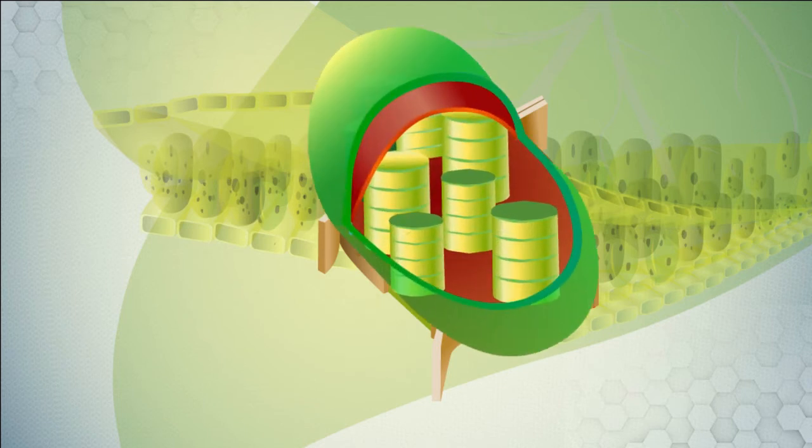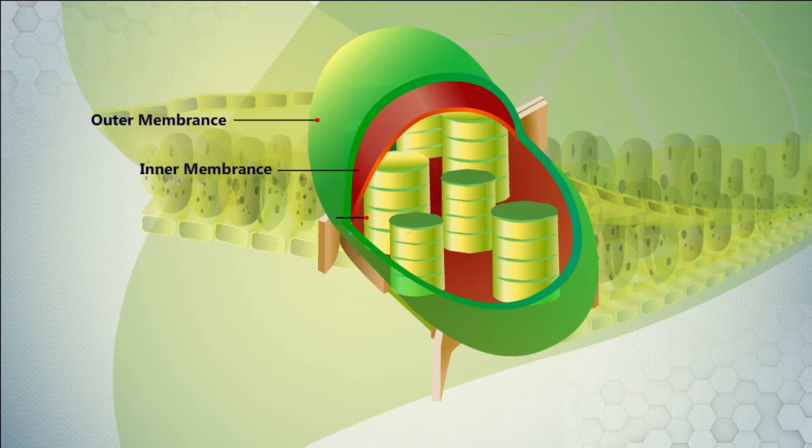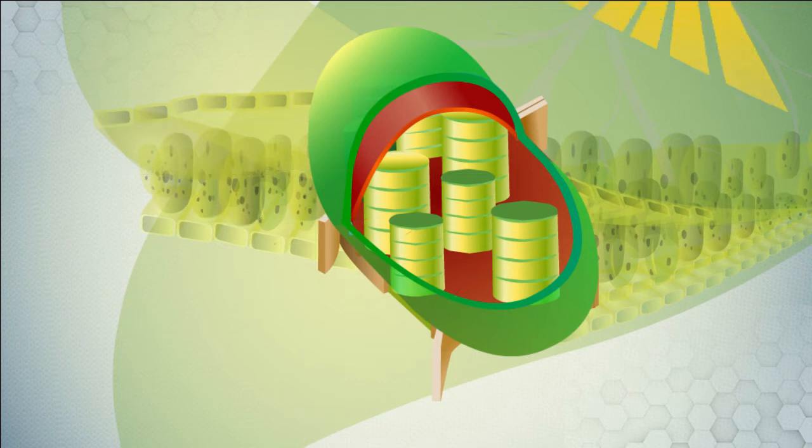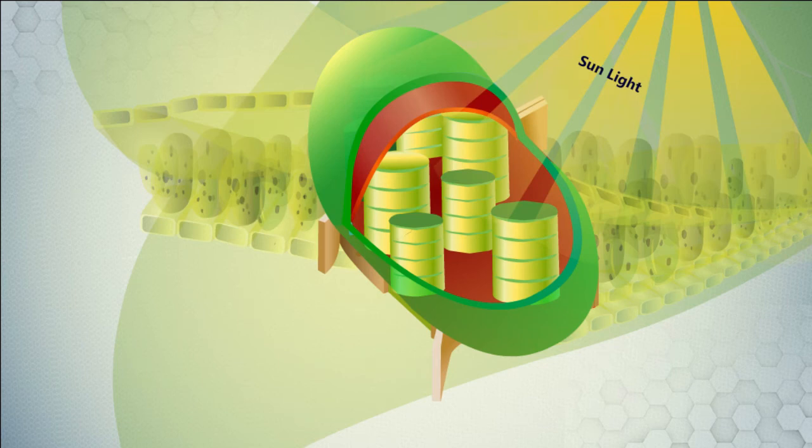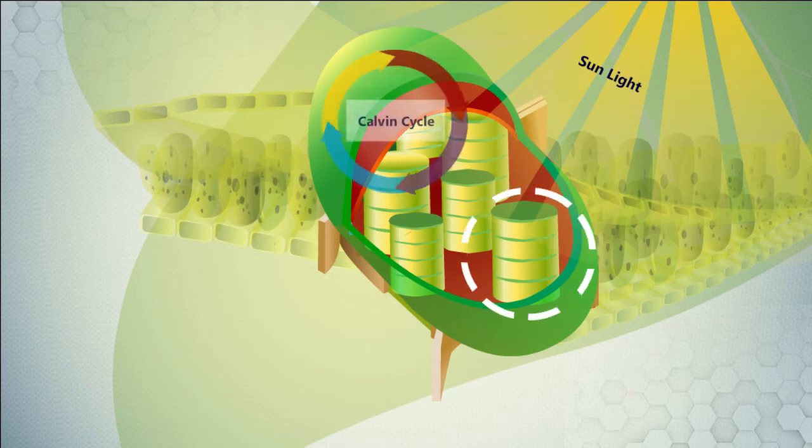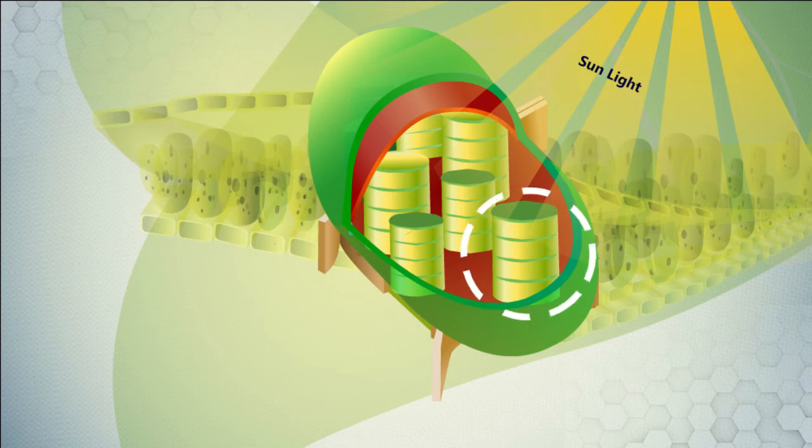The different parts of the chloroplast are outer membranes, inner membranes, thylakoid, and stroma. The main reaction occurs inside the chloroplast. There are two stages: one is the light-dependent reaction which takes place in the thylakoid membrane, and the other is the light-independent reaction which is called the Calvin cycle.